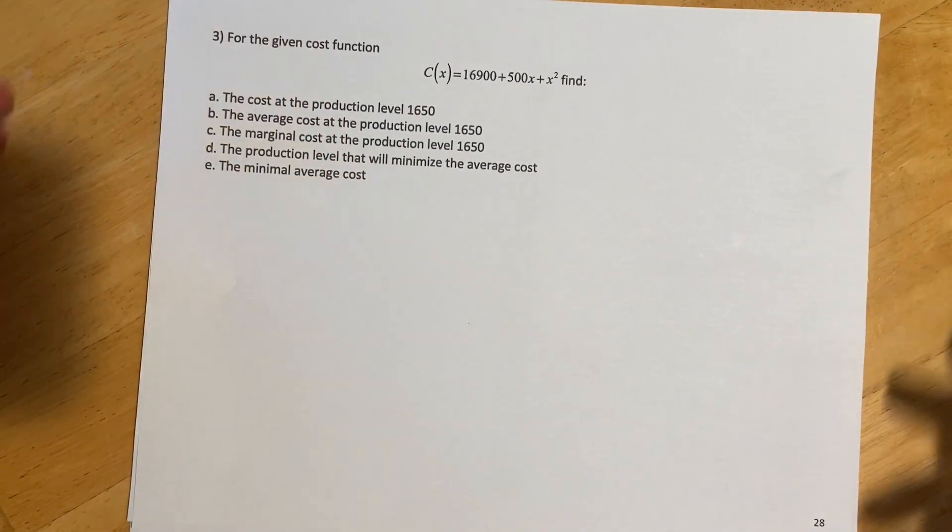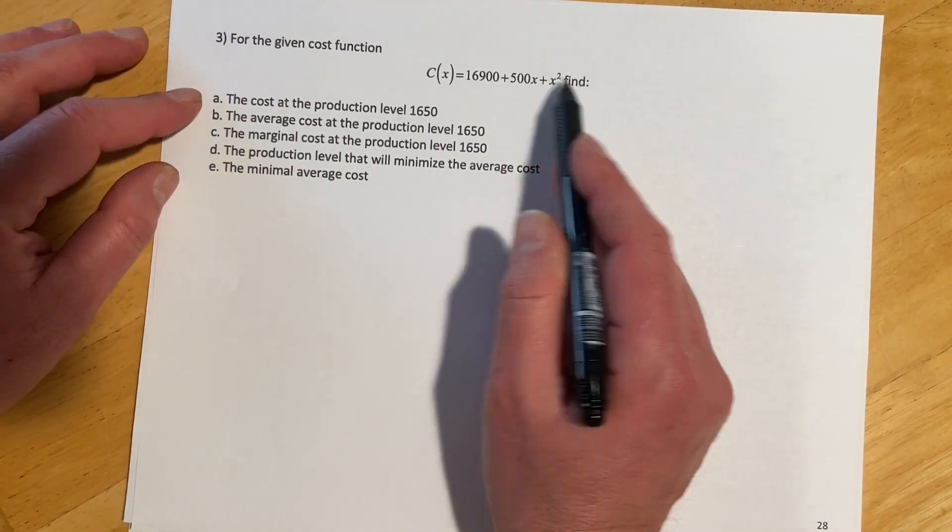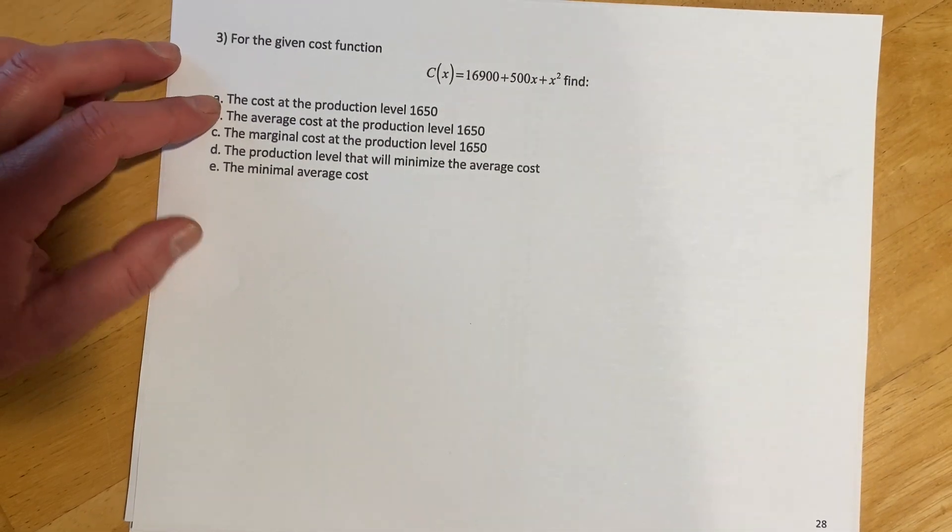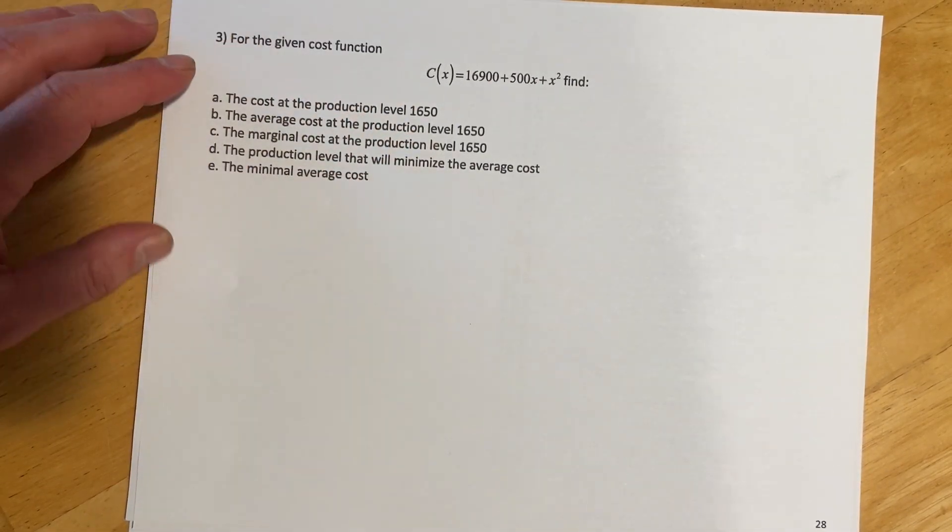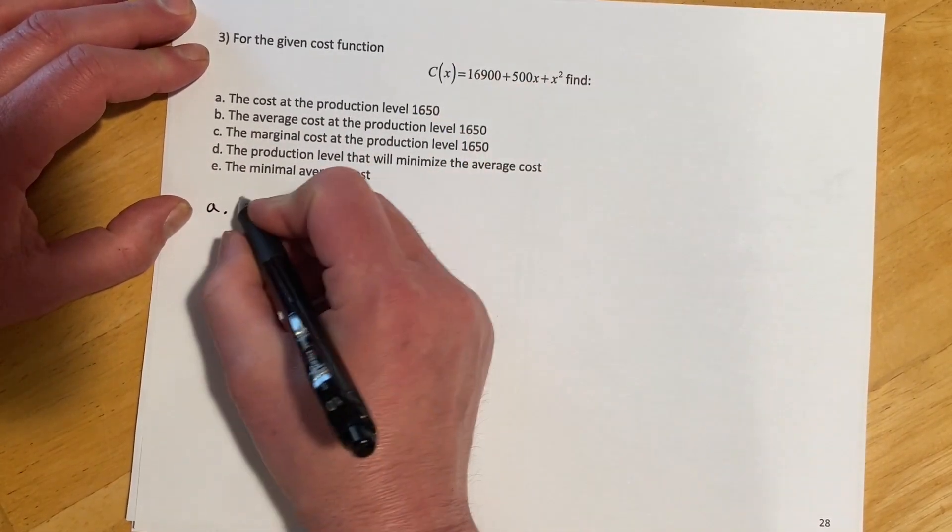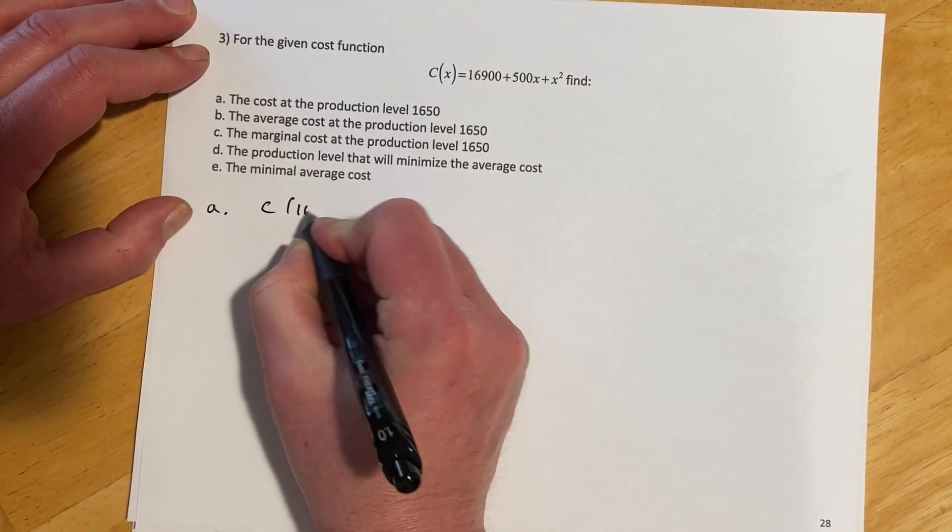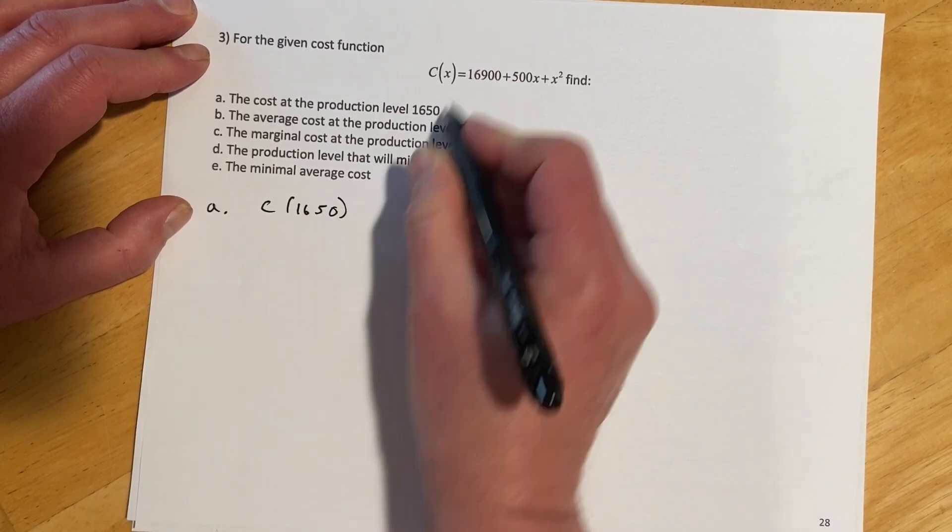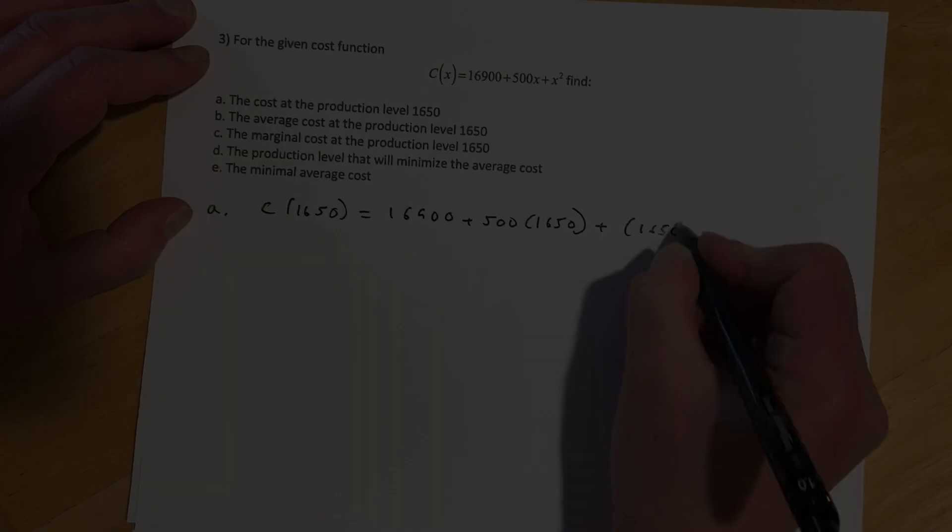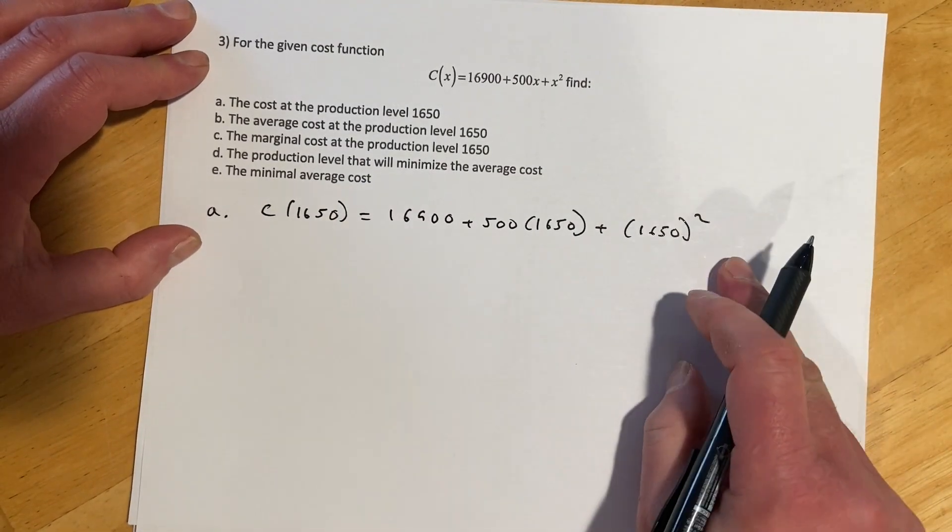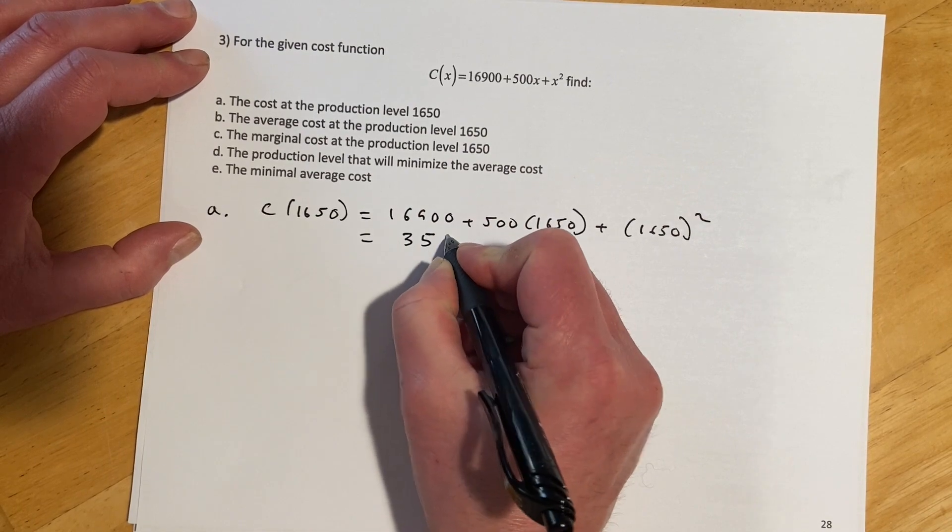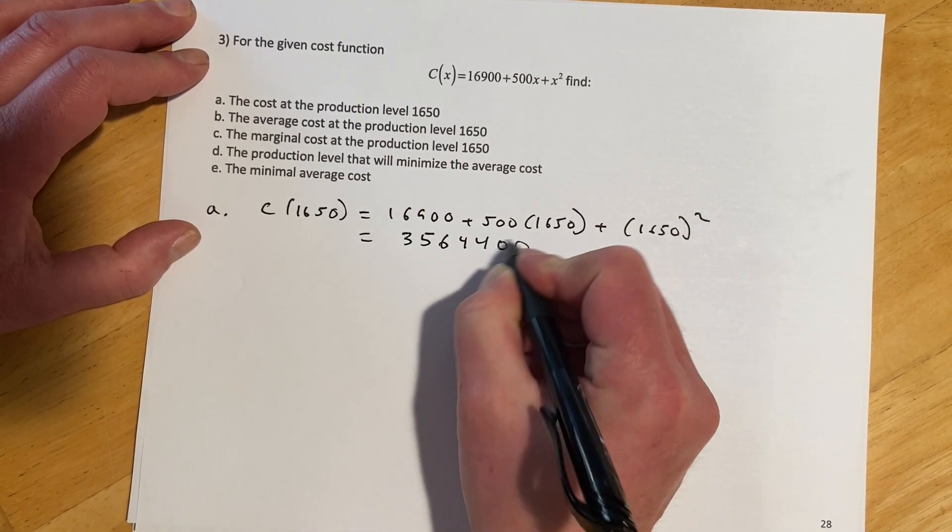Okay, and then this last one, for the given cost function, that we're supposed to find lots and lots of things. So for part A, the cost at the production level is 1,650 units. Okay, that's super friendly. So for A, we just have to find C of 1,650. So we're just plugging in 1,650. And then we'll just toss all that in the calculator, and then it comes out to this big old number. And that's that.